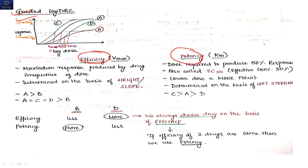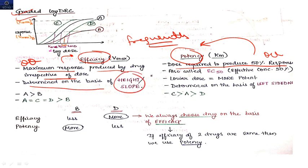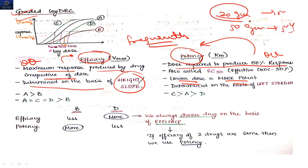Efficacy and potency are very frequently asked questions in examinations. Efficacy is the maximum response produced by a drug, irrespective of dose. Potency is the dose required to produce 50% of the maximum response. Efficacy is determined by the height or slope of the curve. A lower dose required to produce 50% response means the drug is more potent.